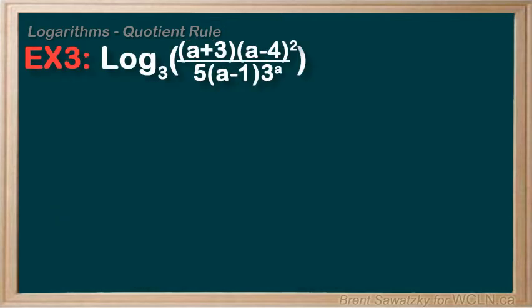Example 3: expand this one. It looks pretty complicated, so the trick is staying organized and breaking it down in little steps using the rules we've learned. We see multiplications on top, so that'll break down using the product rule. We have a fraction, so we'll apply the quotient rule. And we also have some exponents for the power rule.